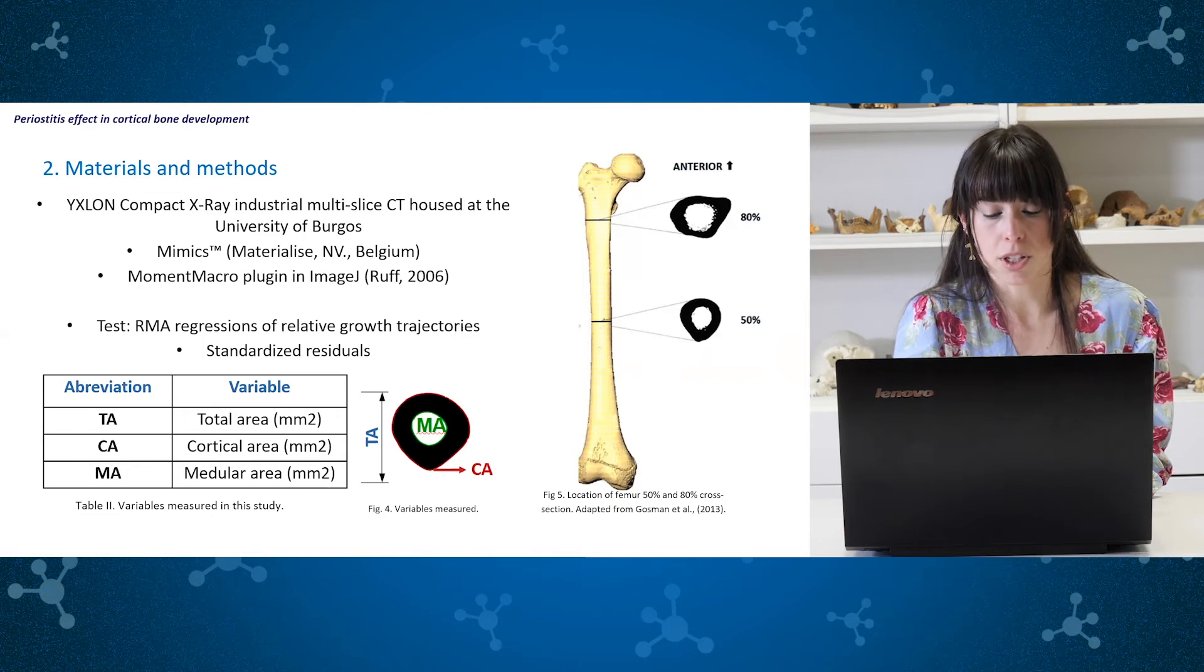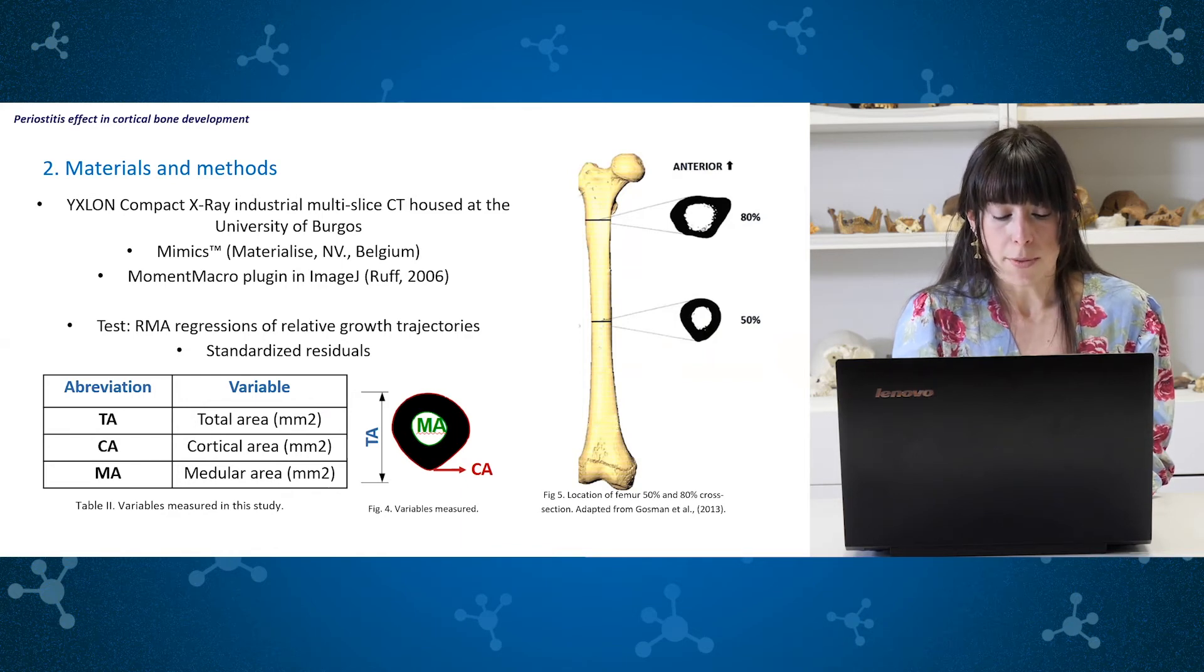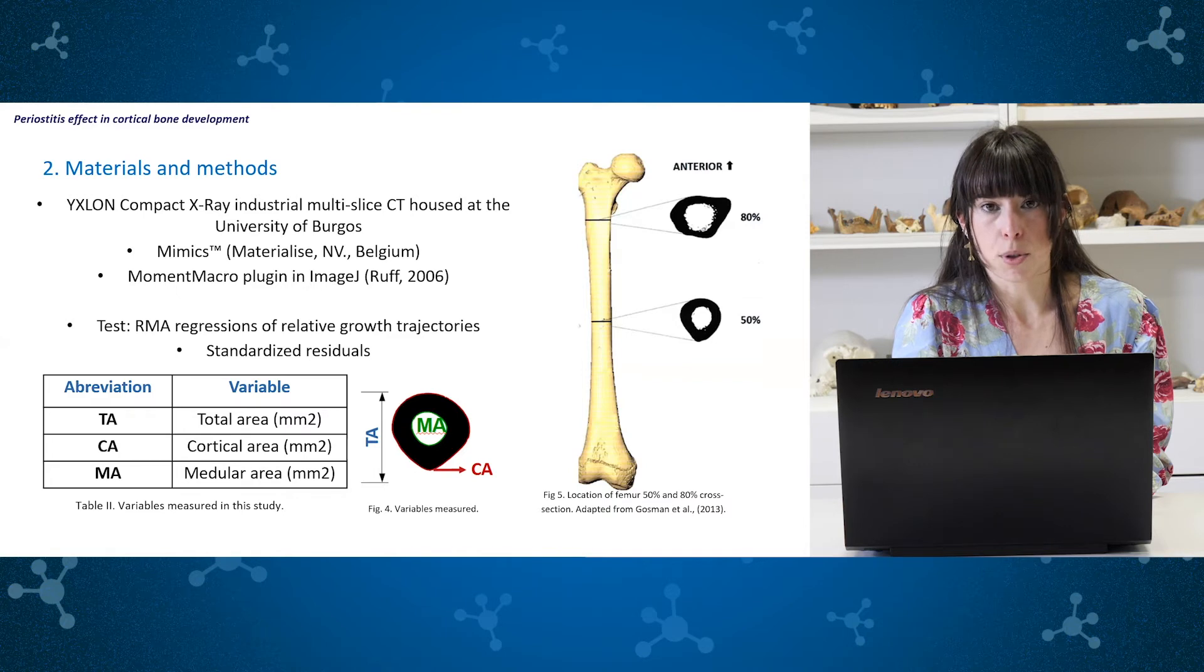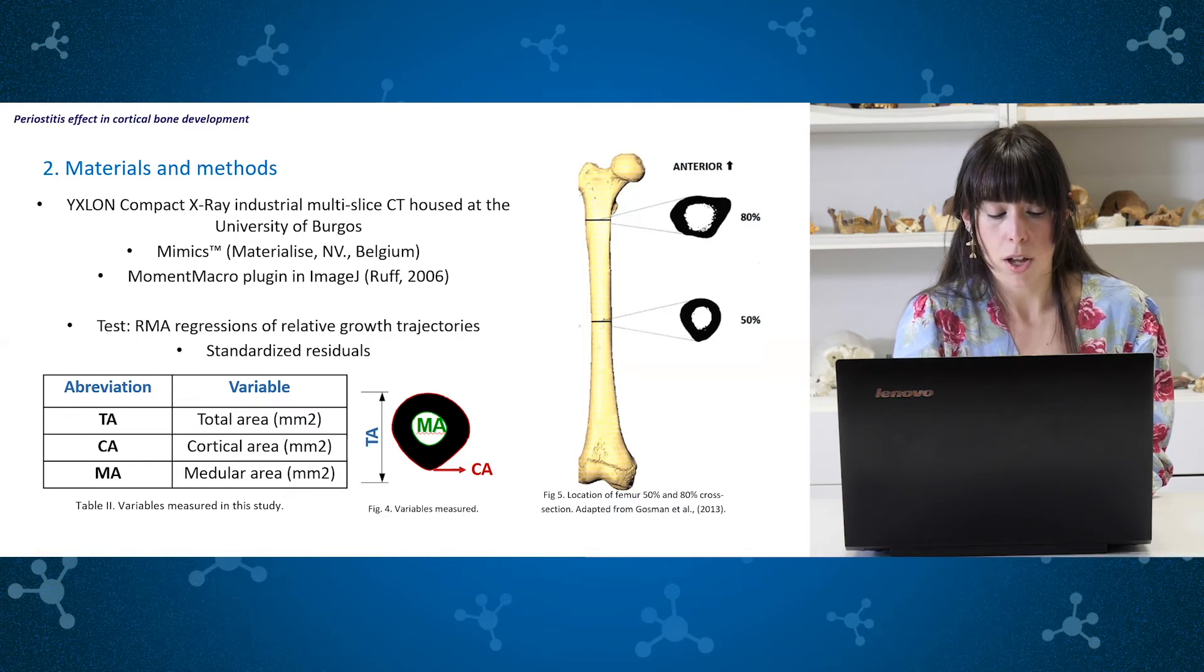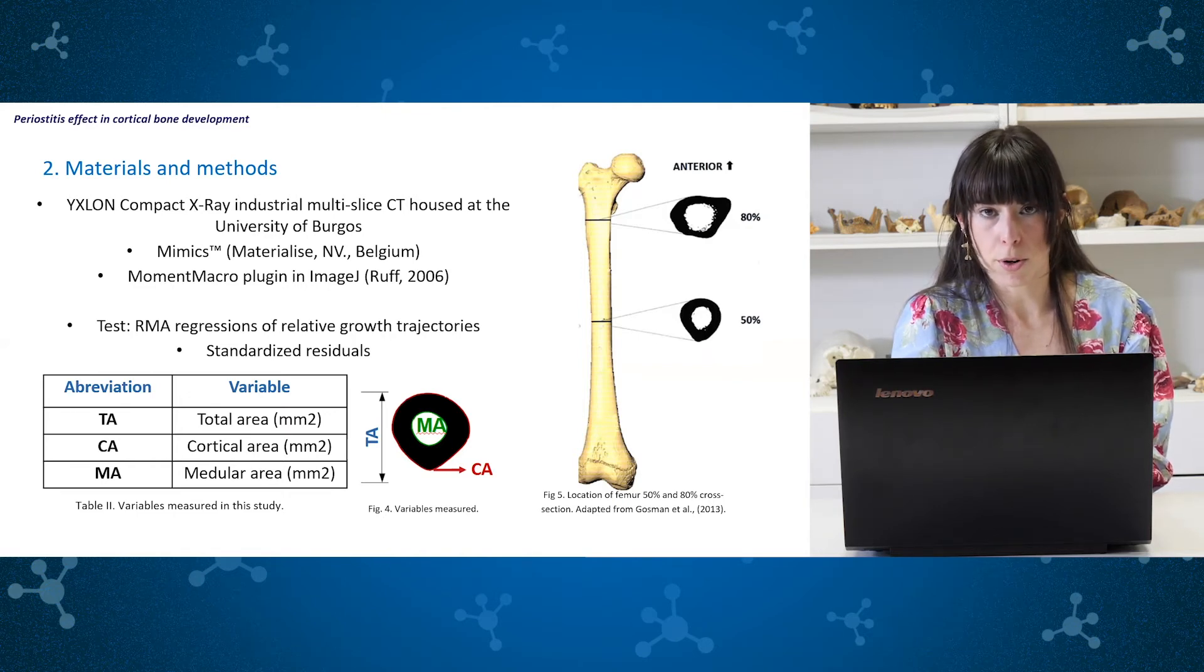These cross sections were subsequently imported into ImageJ to compute cross sectional parameters with Moment Macro plugin. The variables that were taken in consideration for this study were the total area, cortical area and medullary cavity area, which was derived from the previous ones. We established relative growth trajectories of cortical area relative to total area, cortical area relative to medullary area and total area relative to medullary area through reduced major axis regressions. With these regressions, we extracted the standardized residuals. Then, we compared these residuals between healthy and pathological individuals.